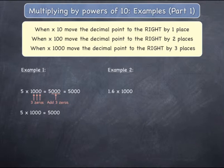Example 2, 1.6 multiplied by 1000. Write your starting number, 1.6, which does have a visible decimal point. Since you are multiplying by 1000, which has three zeros, the decimal point needs to move to the right by three jumps.